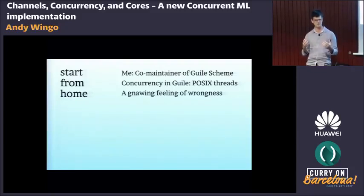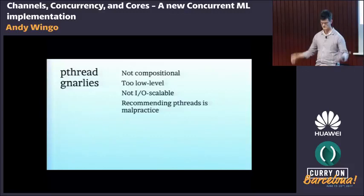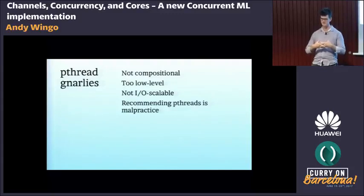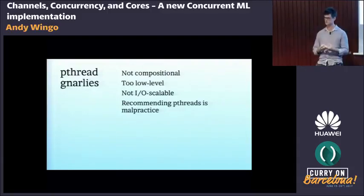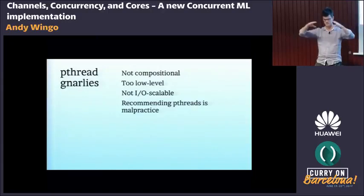I thought about why pthreads aren't satisfying on a very deep level. The specific problems I found were: one, they don't compose. Abstractions built on pthreads and mutexes — specifically, users of mutexes — don't compose with each other. You get deadlock if you compose various pieces of code that use mutexes together without thinking about the mutexes in your system as a whole.